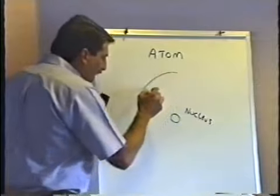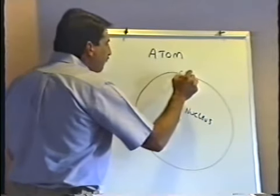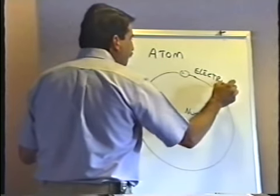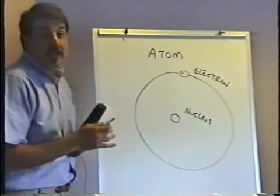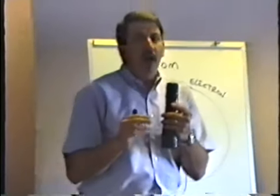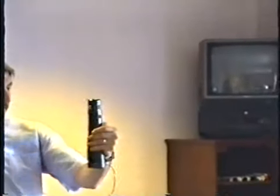In orbit around the atom there's a teeny-weeny little subatomic particle called an electron. The electron is like a planet that's in orbit around the sun, basically. But the orbit's a little bit different. In the solar system, the sun is in the middle and the planets orbit in a planar orbit — they're all in what we call the plane of the ecliptic. The electron's orbit moves all around the centrally located nucleus, all around like this.